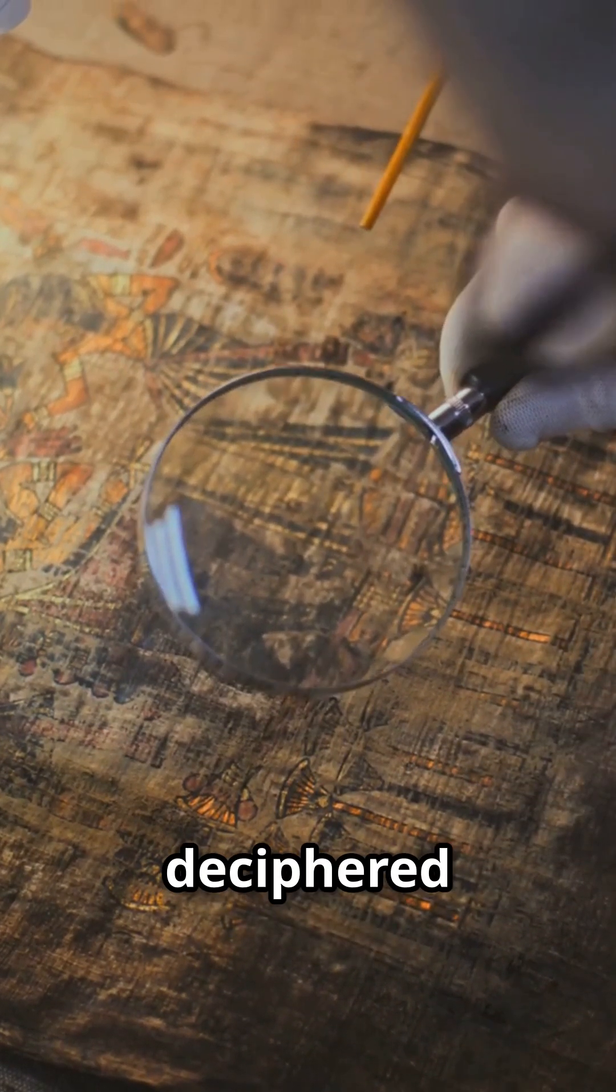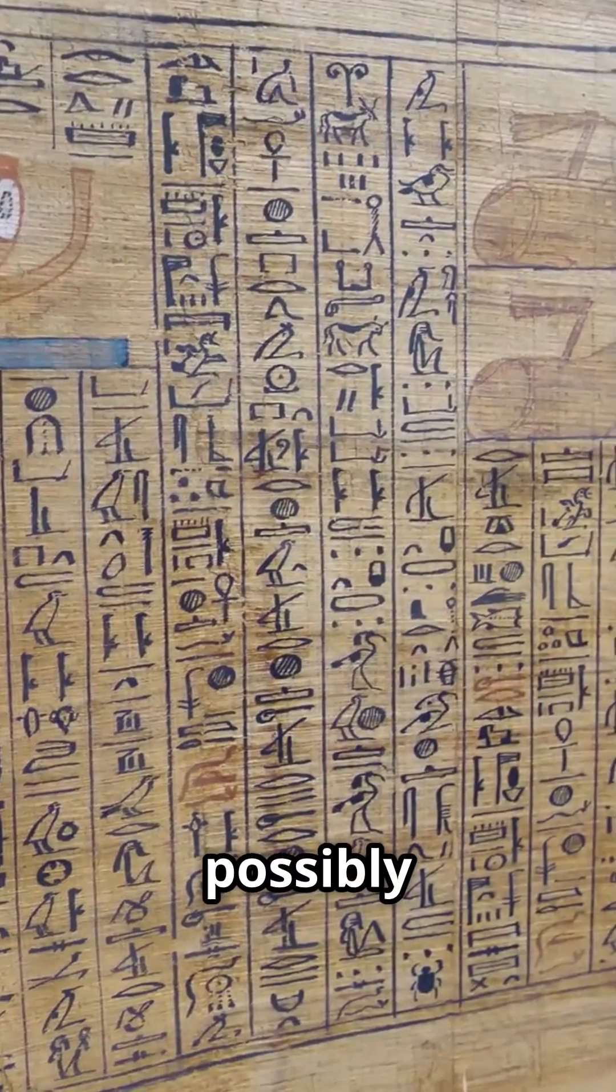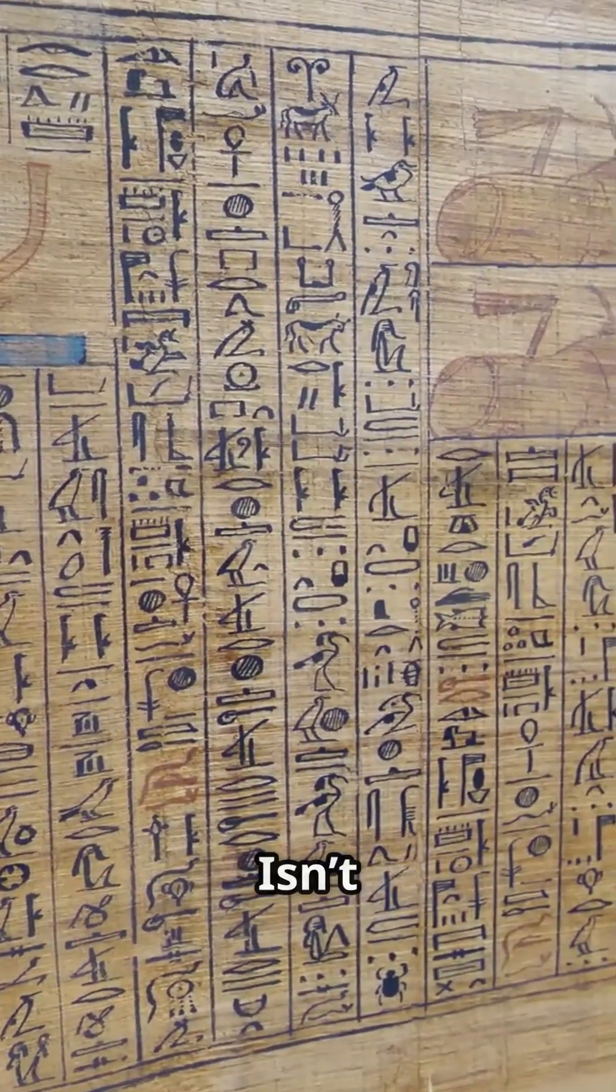One AI recently deciphered a manuscript revealing an unknown civilization that predates ancient Egypt, possibly the lost city of Atlantis. Isn't it incredible?